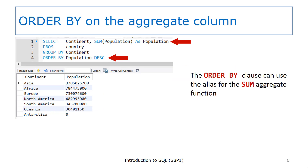We can also get the populations of the continents in order by their total population. In this SELECT, the SUM function uses a column alias. It might look odd to have an alias that uses the same name as the column, but you can see the results in the result grid — the column heading is now population, whereas on the previous slide without the column alias, the heading was SUM population. Another result of using the column alias in the column list is that we can also refer to the alias in the ORDER BY clause. So the end result is that we have the total populations for the continents in descending order by population.